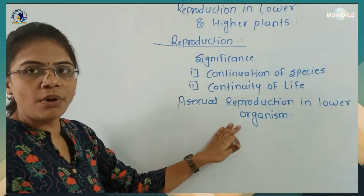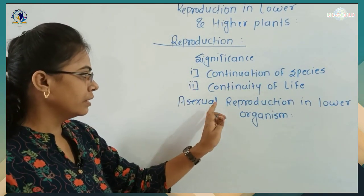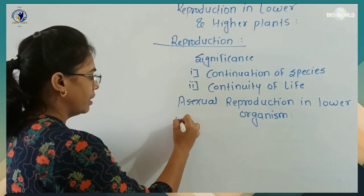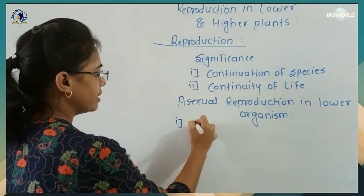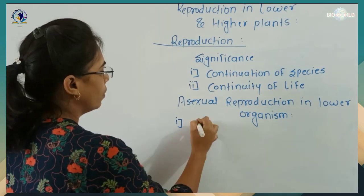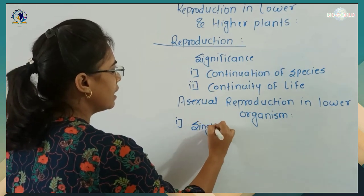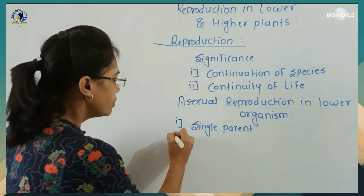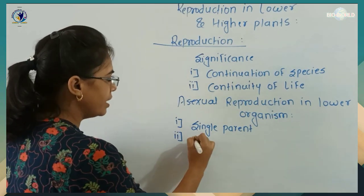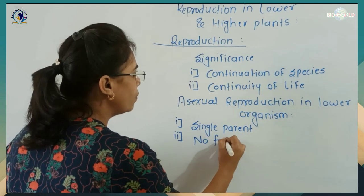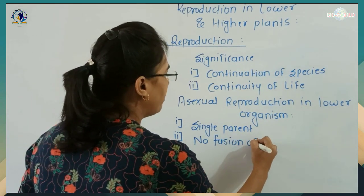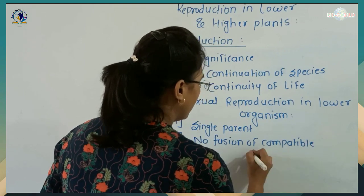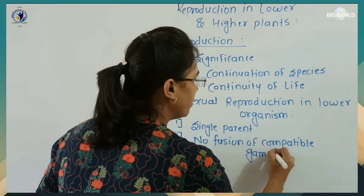Let's move towards asexual reproduction in lower organisms. First, asexual reproduction involves only a single parent. Since only a single parent is involved, there is no fusion of compatible gametes.